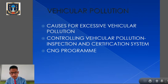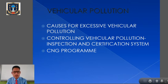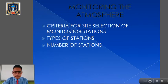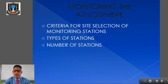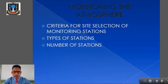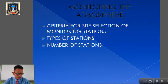We also learned about BS4 norms — Bharat Stage norms — and we are currently in BS6 norms. These norms are there to control the emission of harmful gases from vehicles. We also learned about the monitoring of atmosphere, which is essential to ensure the environment does not undergo further degradation or deterioration. We covered the criteria for site selection of monitoring stations and the different types of stations: type A, B, C, D, E, and F.